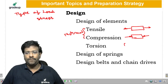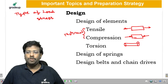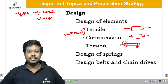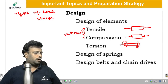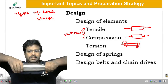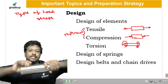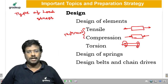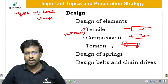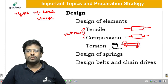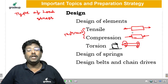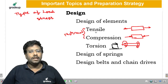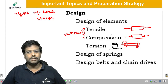Next is torsion, which is related to shafts. If you apply a twisting moment, one side experiences compression and the other tension. When force is applied parallel to the surface, it causes torsion on the shaft. Along with torsion, there is also a shear force — a tangential force — acting on the member. We need to understand up to what load the material can bear, and all these elements are discussed in the design of various machine elements.